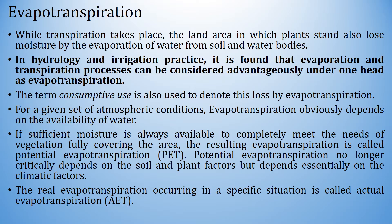While transpiration takes place, the land area in which plants stand also loses moisture by the evaporation of water from soil and water bodies. In hydrology and irrigation practice, it is found that evaporation and transpiration processes can be considered advantageously under one head as evapotranspiration. The term consumptive use is also used to denote this loss by evapotranspiration.